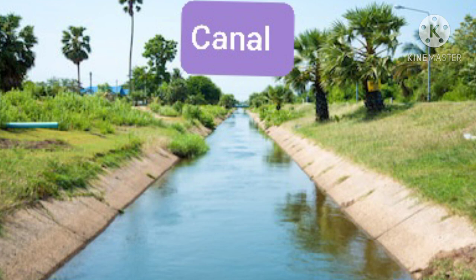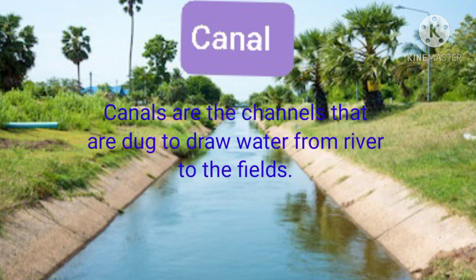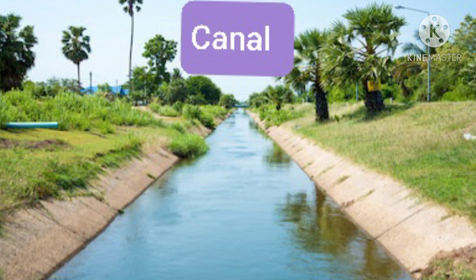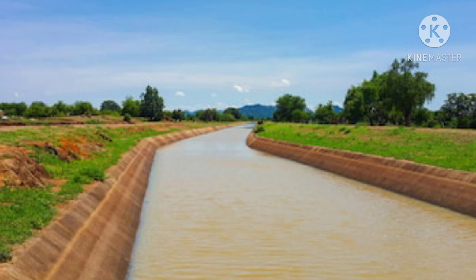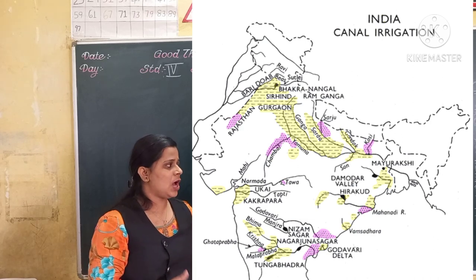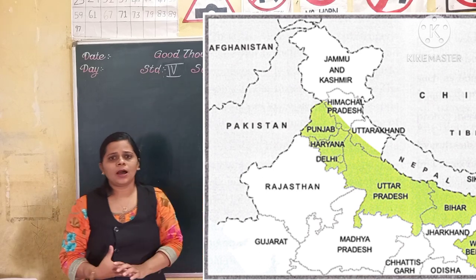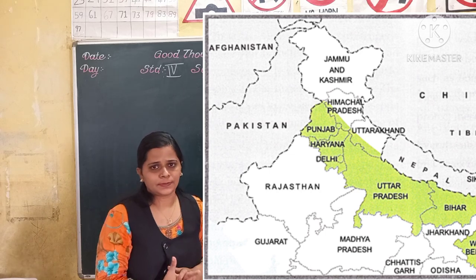See here the picture of canals. These canals are channels that are dug to draw water from the river to the field. Canals are man-made, so they are sometimes called artificial rivers. India has a good network of canals. Canals are very common, especially in the northern plains — in the states of Punjab, Haryana, Uttar Pradesh, and Bihar.